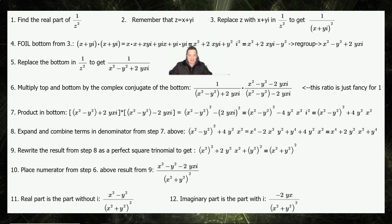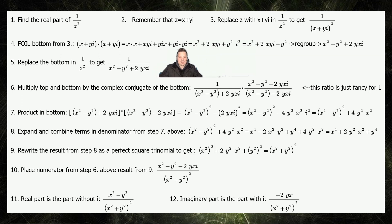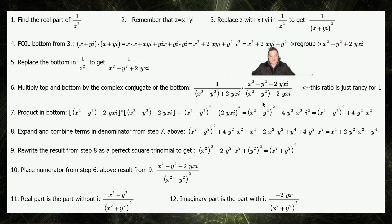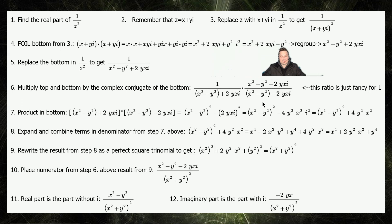So x times x would be x squared. xyi plus yix, that's going to give you 2xy. And then y times y and i times i — that's going to give you y squared times i squared. Notice that there's a positive y squared i squared, but i squared is equal to negative 1. So at the next stage, it gives you negative y squared in that position. So it gives you x squared plus 2xyi minus y squared — I replaced i squared with negative 1, multiplied by the positive y squared, and it gave me negative y squared.